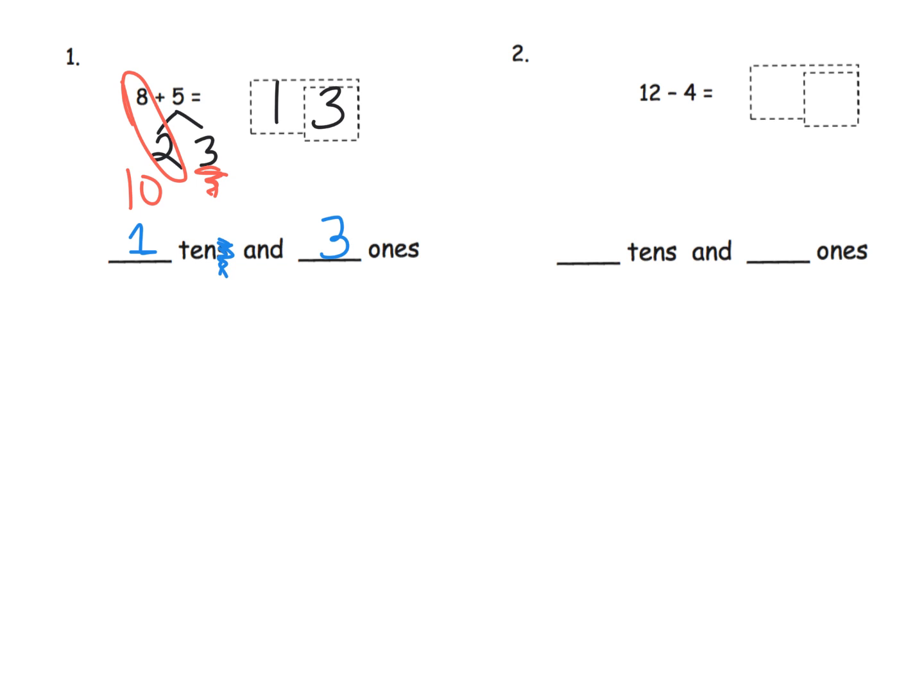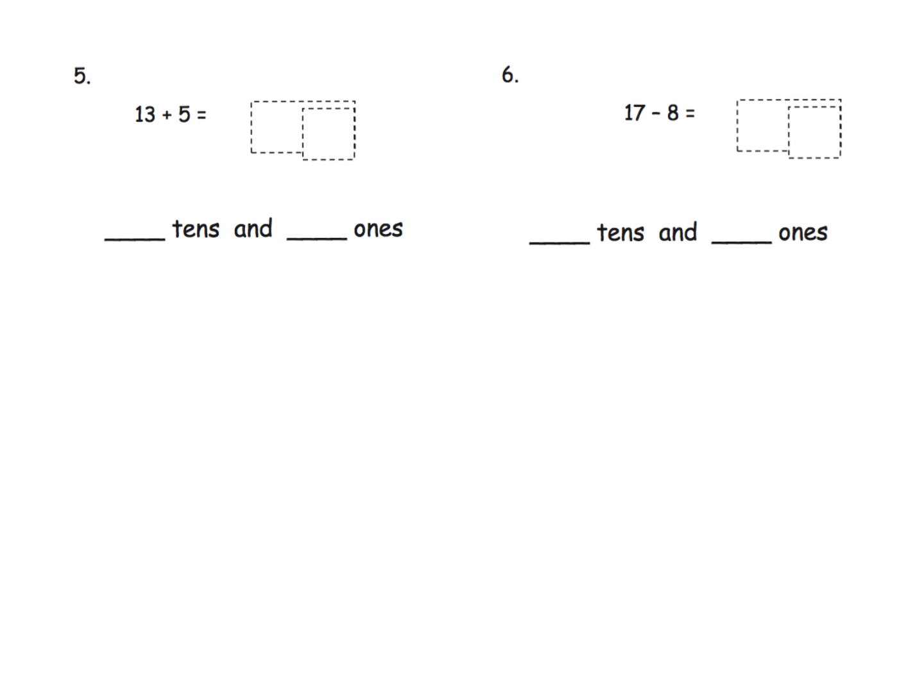Alright, and a refresher course on 12 minus 4. The idea is we're going to decompose that 12 to be 2 and 10, and now we can subtract from 10. So 10 minus 4 gives us 6, plus the original 2 gives us the final answer of 8. So we have 0 tens and 8 ones.